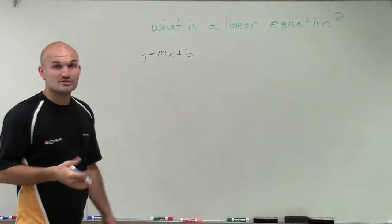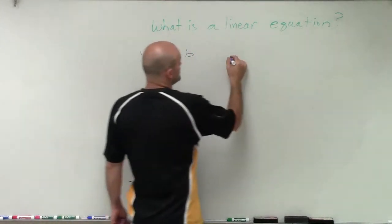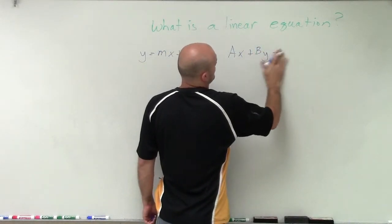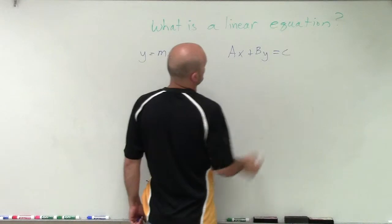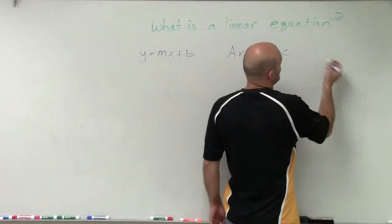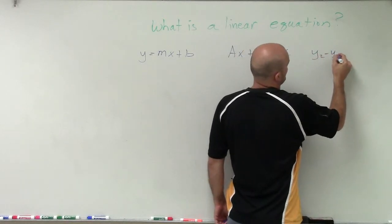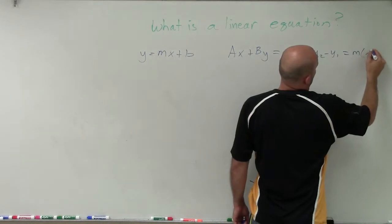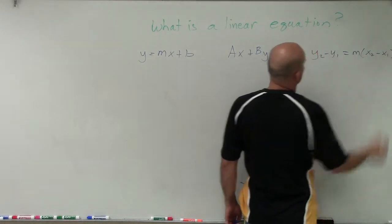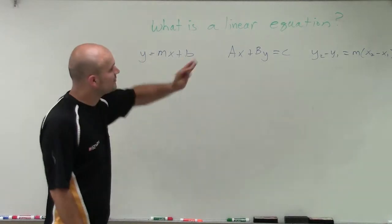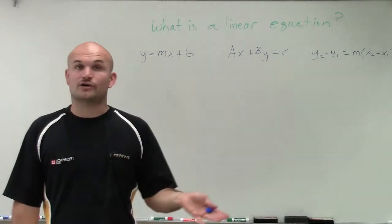The most famous one that we like to use is slope-intercept form. That is going to produce a linear graph. Also, we use the standard form. And then lastly, we also have point-slope form. So these are all three different ways that we can write our linear equations.